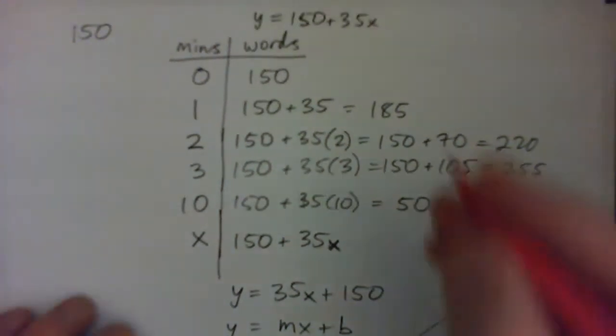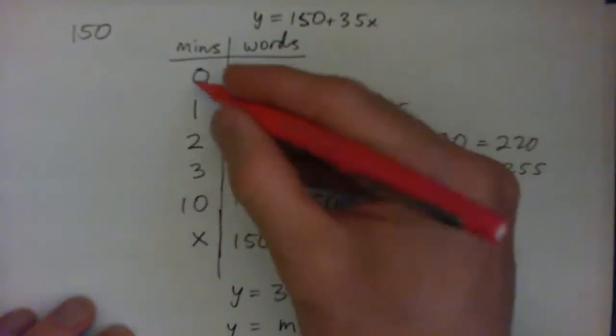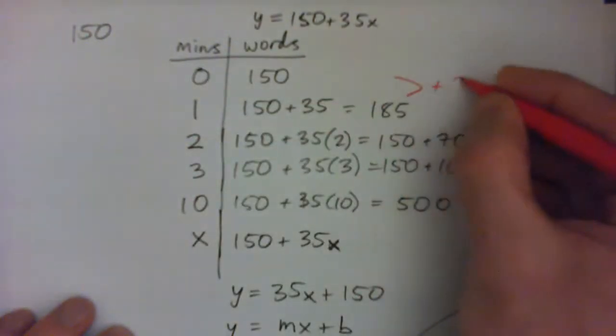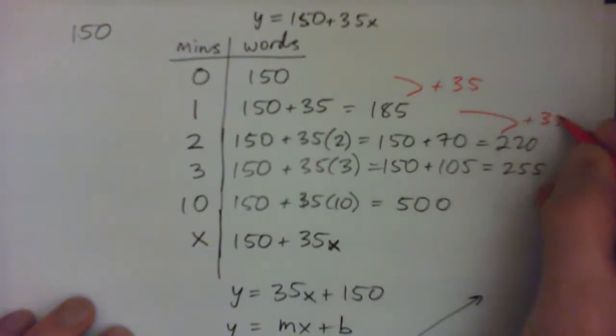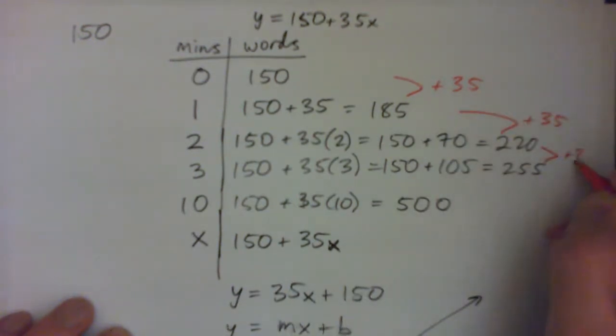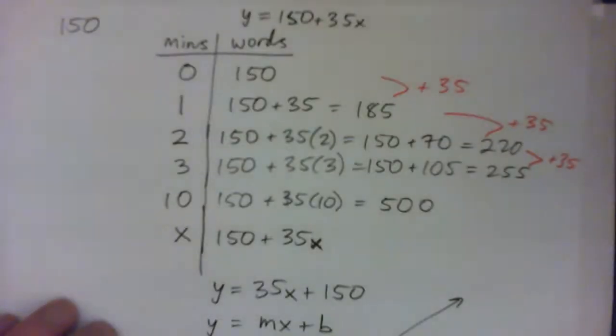But also, for every increase on the left, it's going up by the same amount. It keeps going up by 35, right? So it keeps going up by 35, so that's how we know it's a linear function as well, right? Yep, perfect.